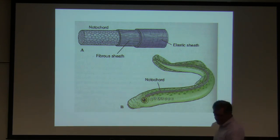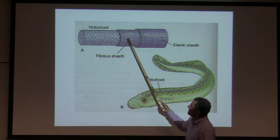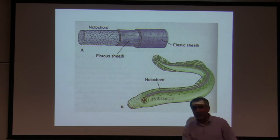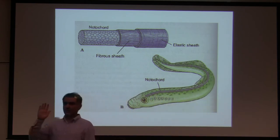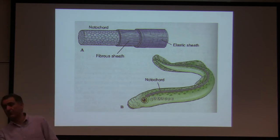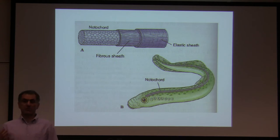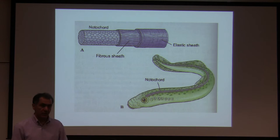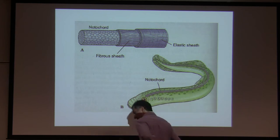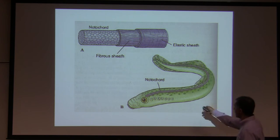The notochord is generally a connective tissue. The cells are surrounded by a fibrous sheath of connective tissue, and outside of that is an elastic sheath. The notochord supports the animal, and muscles can attach to it. It allows the animal to be flexible and to move — which is advantageous evolutionarily. Animals without vertebrae but with a notochord can move and flex.